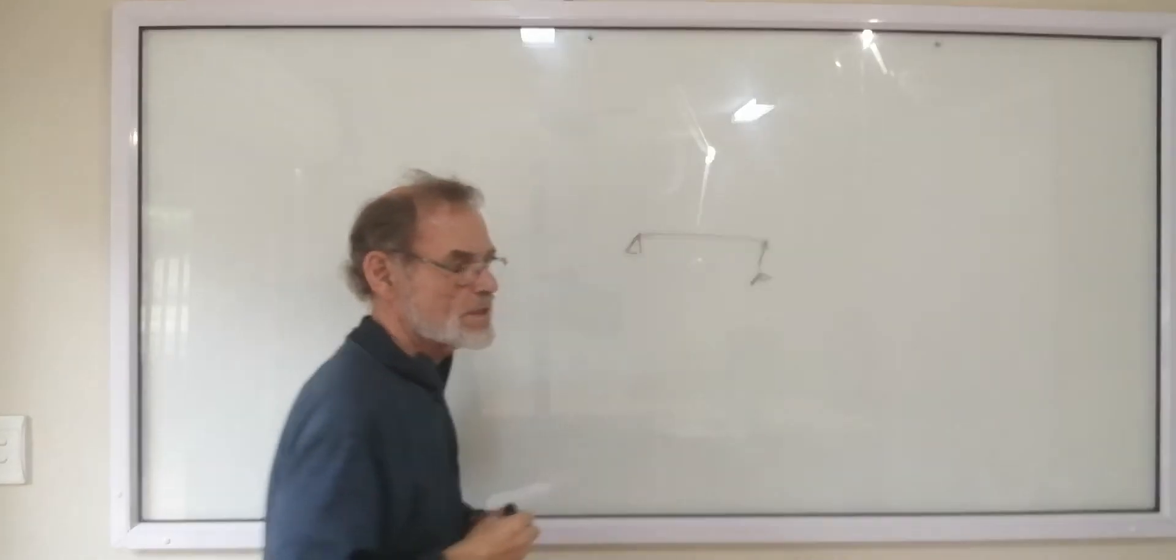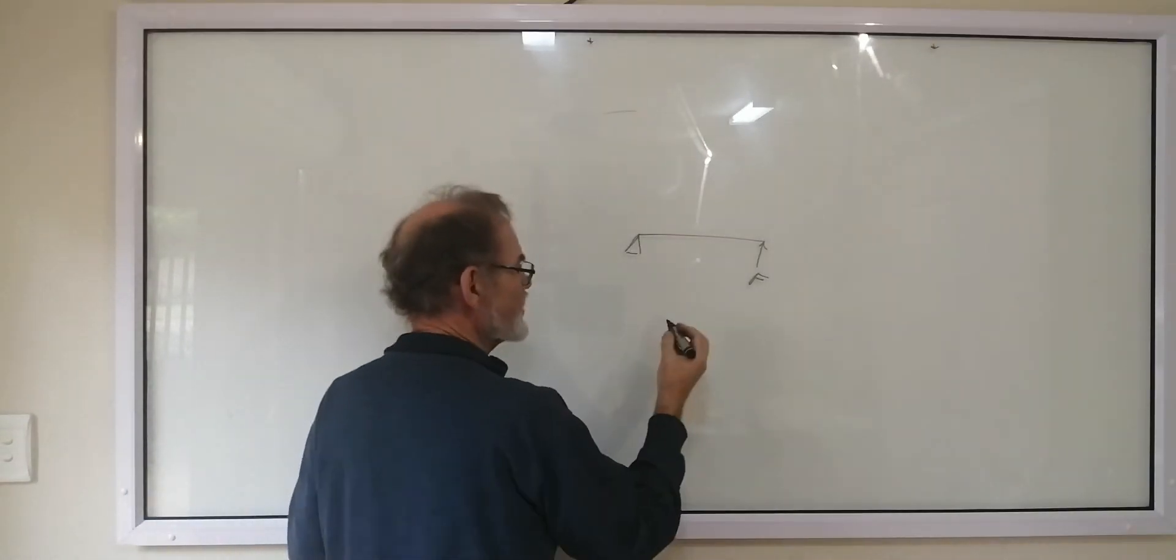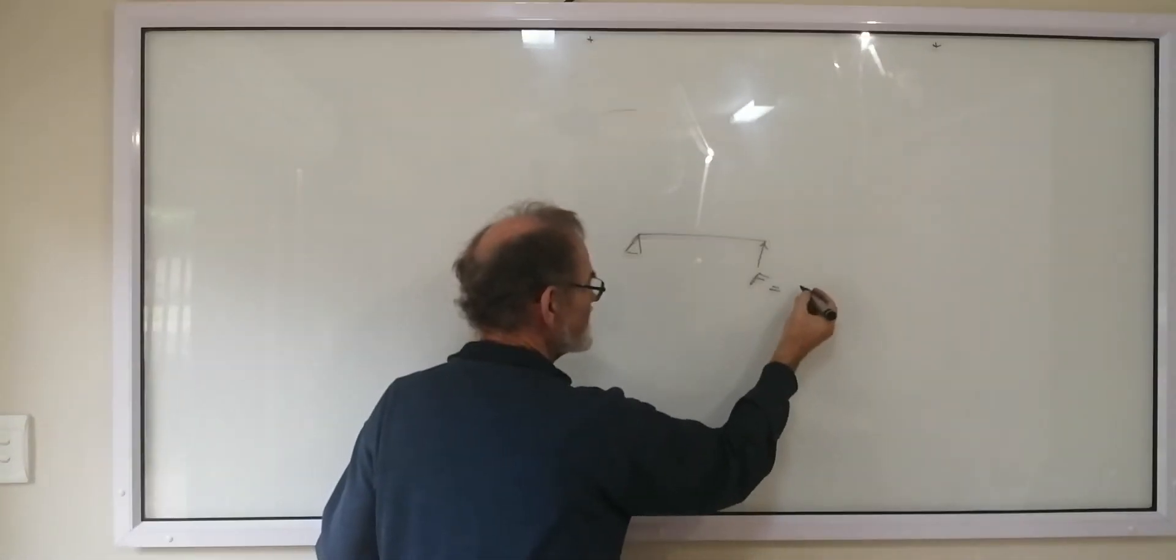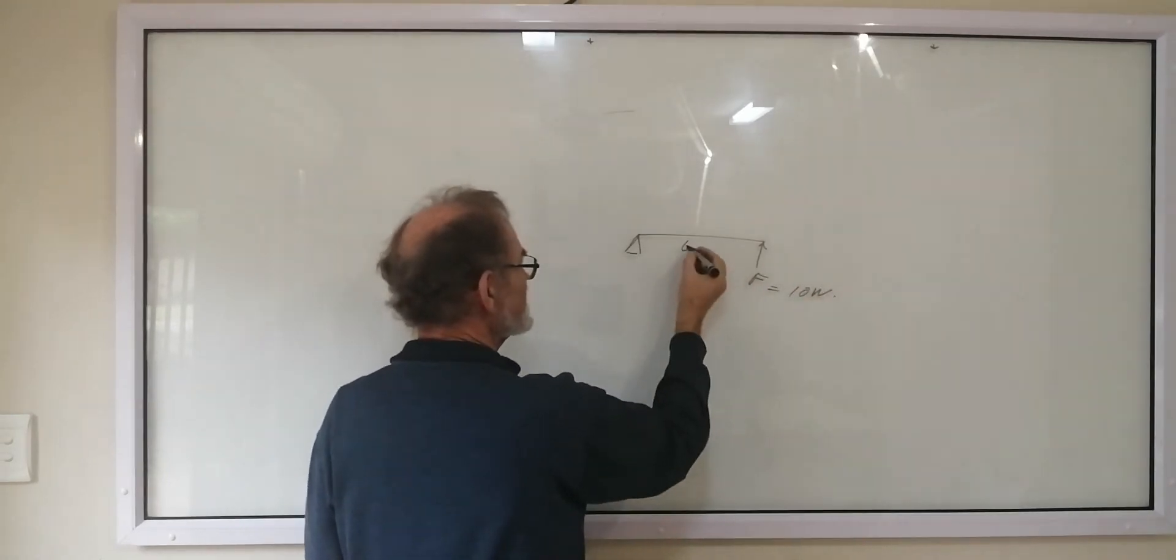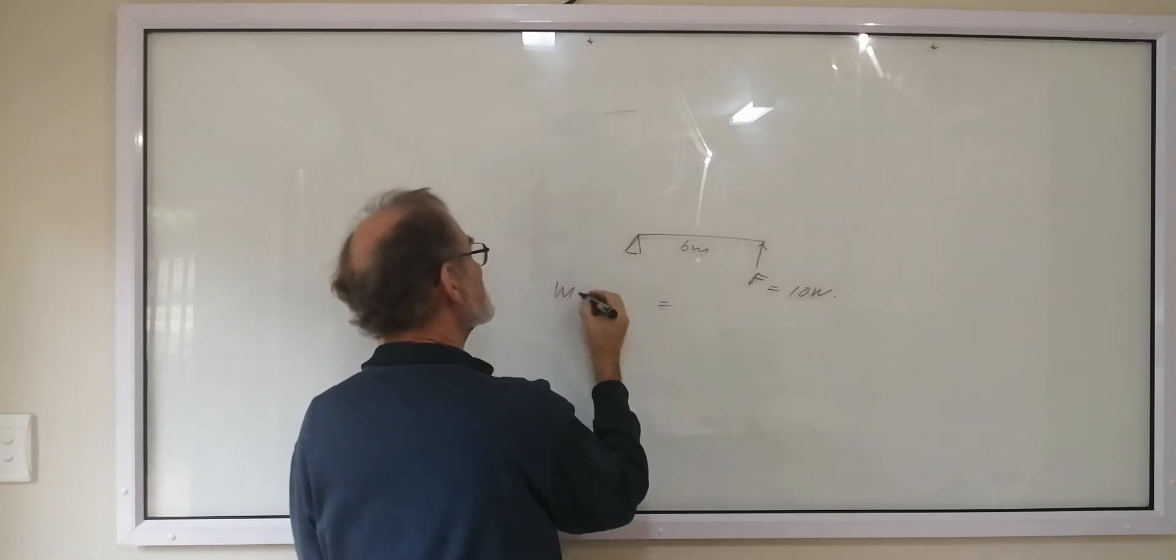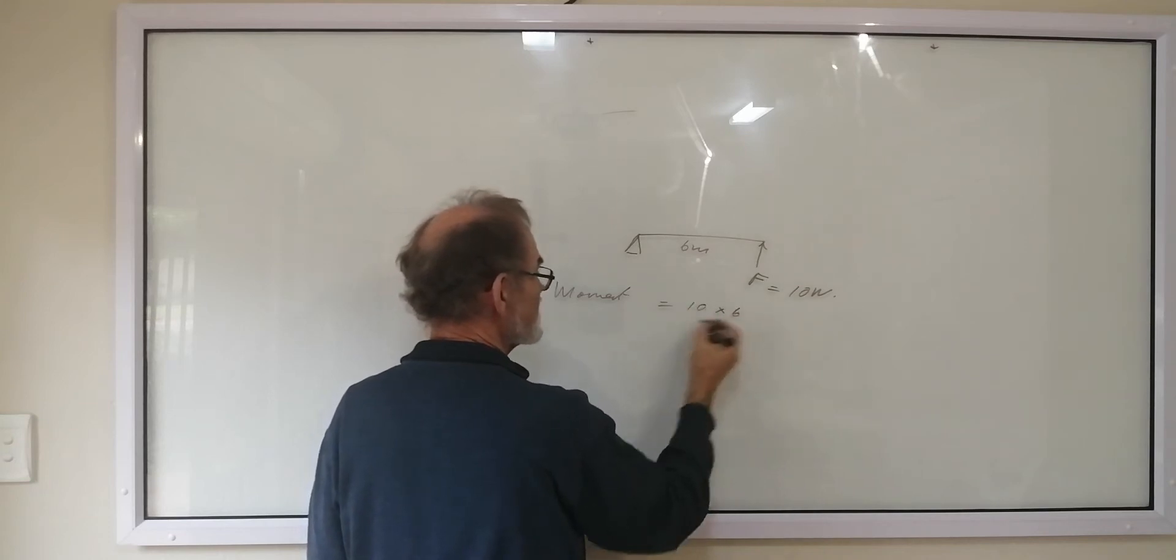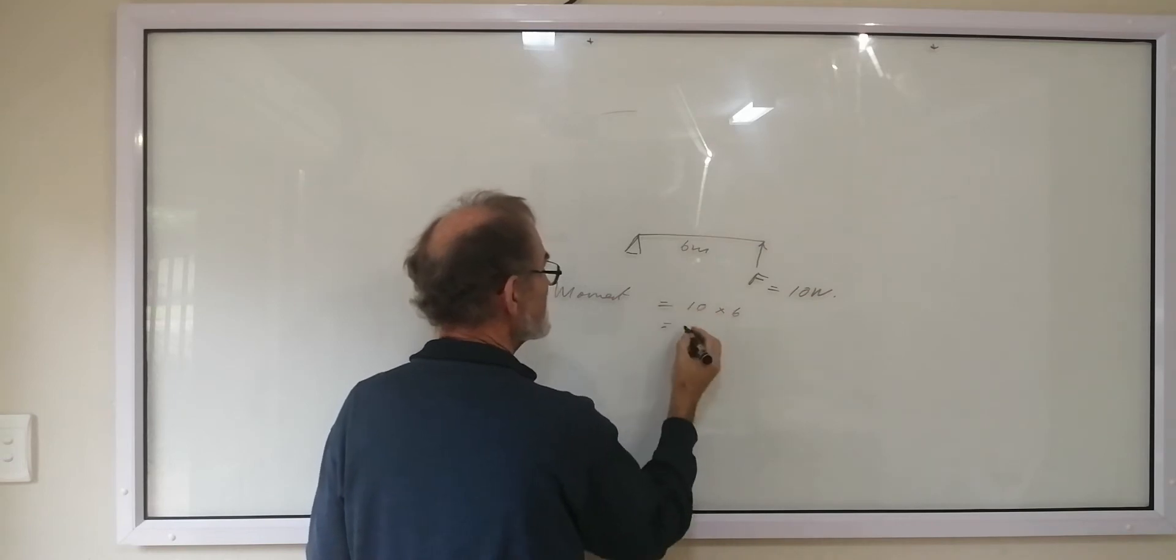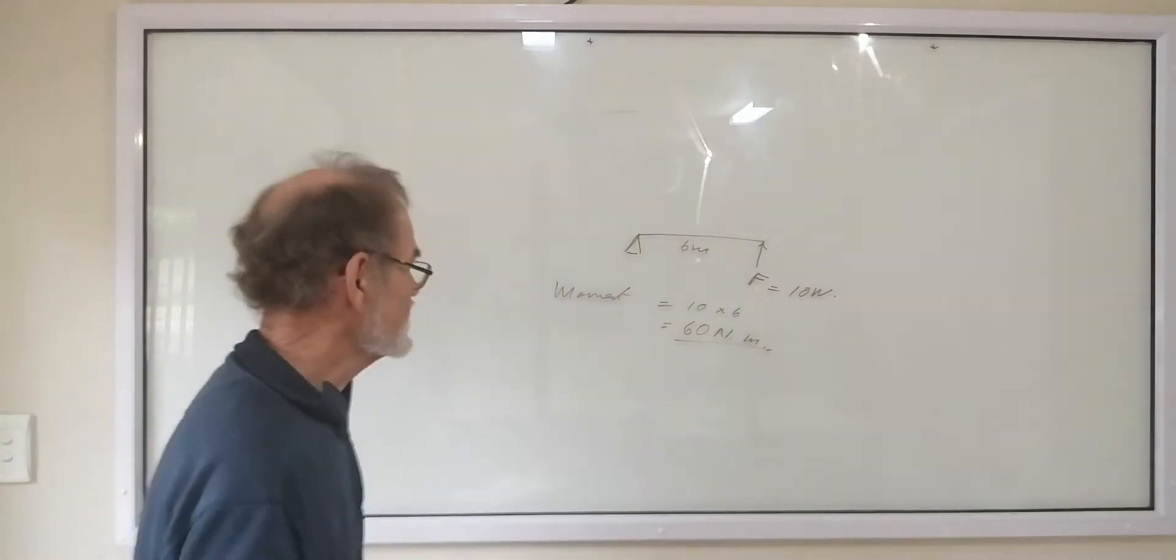And the moment of the force, the actual moment, is mainly calculated by the force. If this is 10 newtons, and this is 6 meters, then we've got a moment of 10 times 6 is equal to 60 newton meters. And that's how we calculate moments.